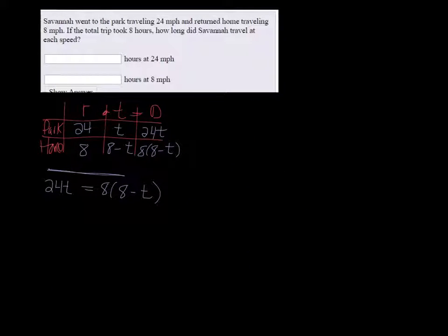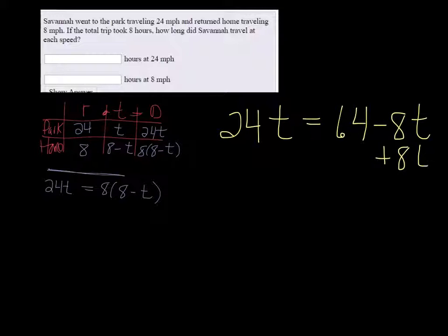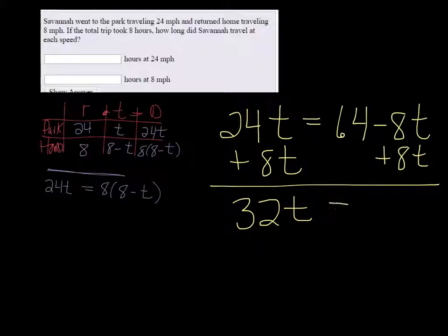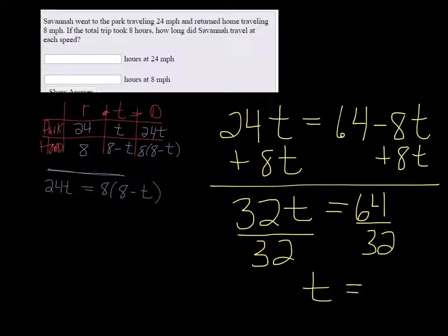So 24T, distributing the 8 equals 64 minus 8T. Add the 8T to both sides and we get 32T equals 64. Dividing 32 on both sides, we get that T equals 2.